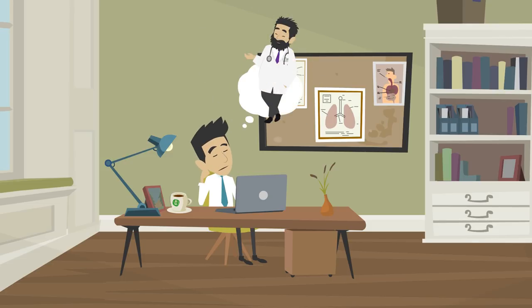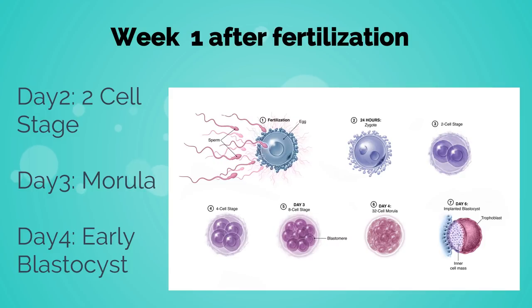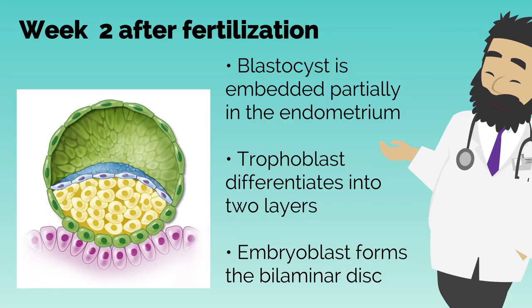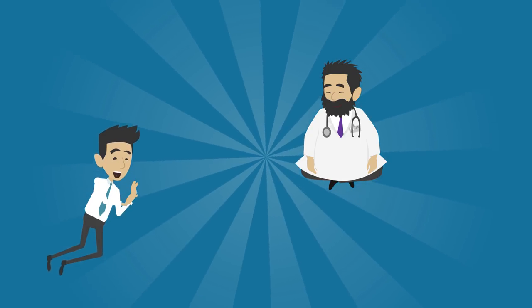Hey Sam, how could you have totally forgotten all the embryology I taught you your first year? I guess we're going to have to start from the beginning again. During week 1 after fertilization, the embryo begins to divide — going from two cells to morula on day 3 and early blastocyst on day 4. At the blastocyst stage, the cell begins to segregate into an inner cell mass, the embryoblast, and the outer cell mass, the trophoblast. The trophoblast continues to the placenta and begins the implantation process. During week 2, the blastocyst is partially embedded in the endometrium. The trophoblast differentiates into the cytotrophoblast and the syncytiotrophoblast. The embryoblast forms a bilaminar disk called the epiblast and hypoblast. The extra-embryonic mesoderm splits into somatic and splanchnic layers, and subsequently two cavities are formed: the amniotic sac and the yolk sac.